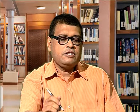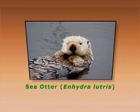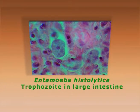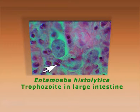The sea otter, Enhydra lutris, is a keystone species present in the sea and connected to different animals. If it is killed, the food web will collapse. Another very common protozoa is Entamoeba histolytica, which is present in water and causes disease in the intestine. The typical infection is commonly known as amoebiasis. These are the infective Entamoeba histolytica trophozoites present in the large intestine.